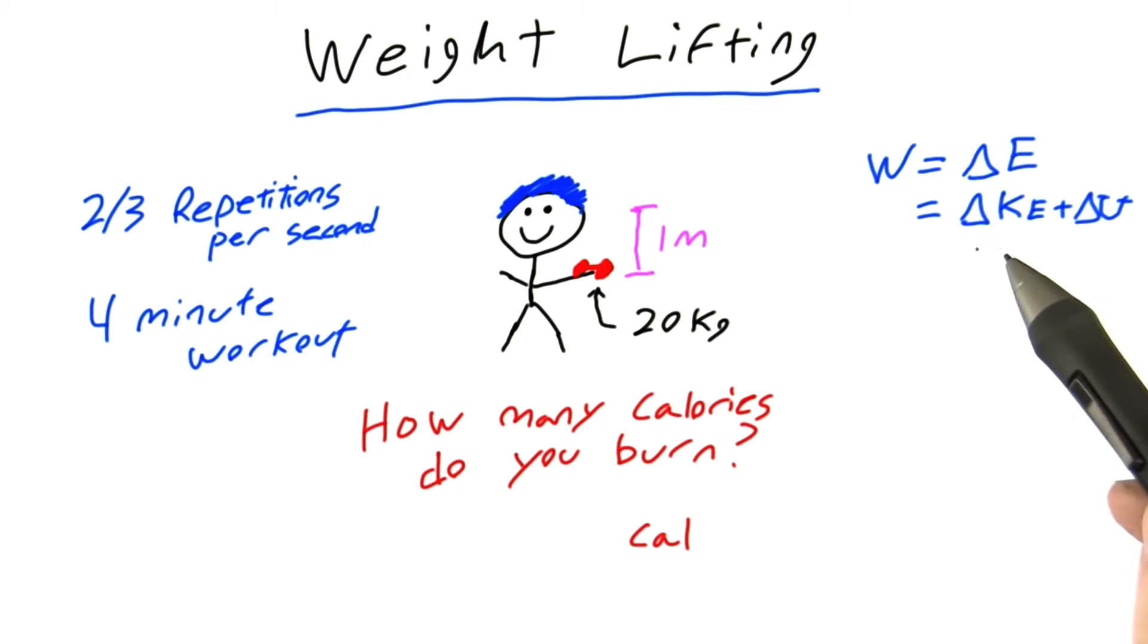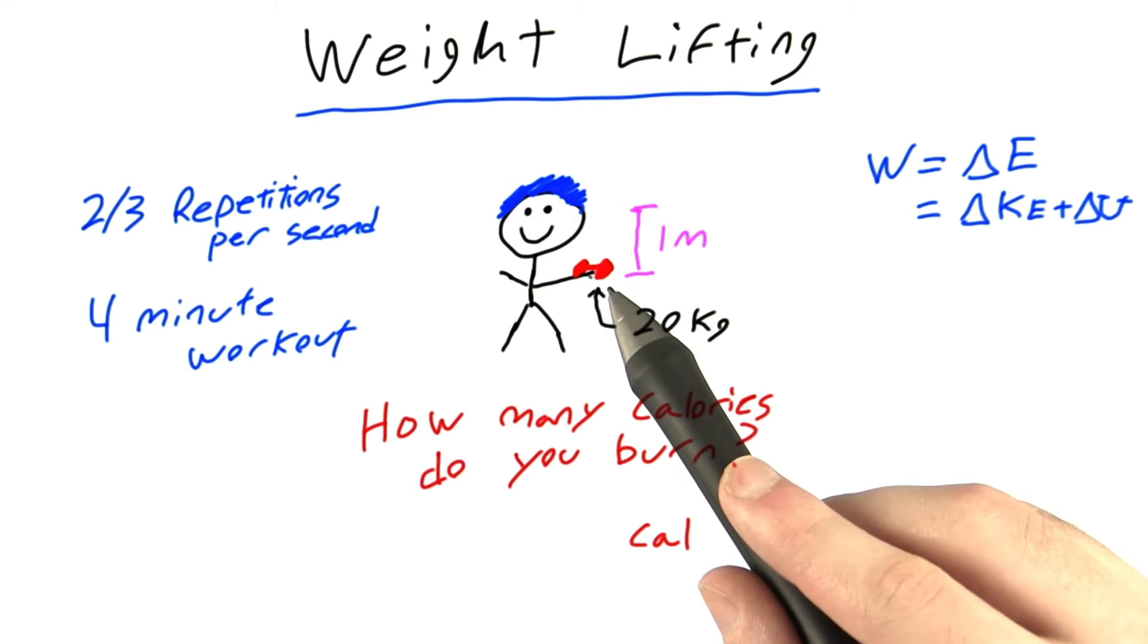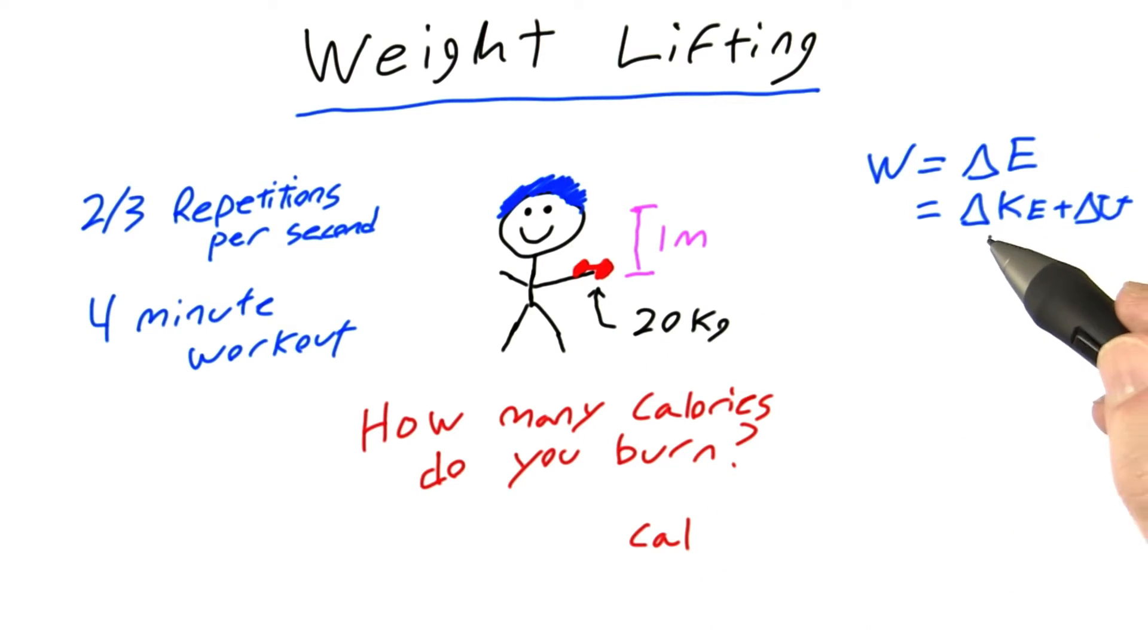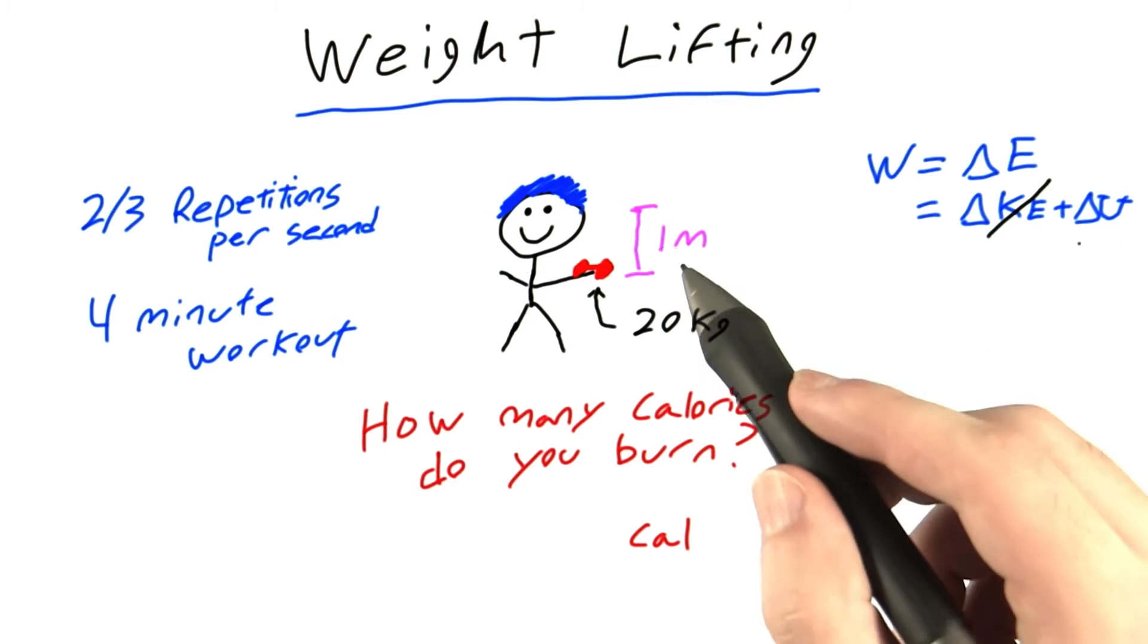The change in energy of the weight is equal to the change in its kinetic energy plus the change in its potential energy. Well, the weight starts at rest and it ends at rest too, so the change in kinetic energy is 0. But it does change in potential energy when you raise it that 1 meter.